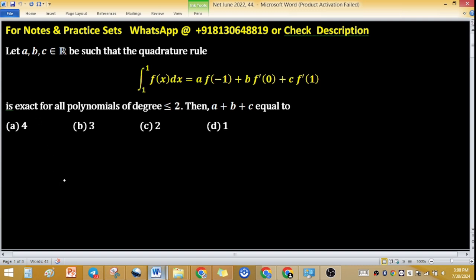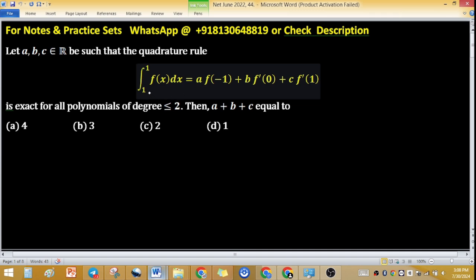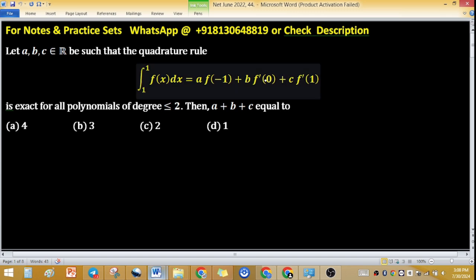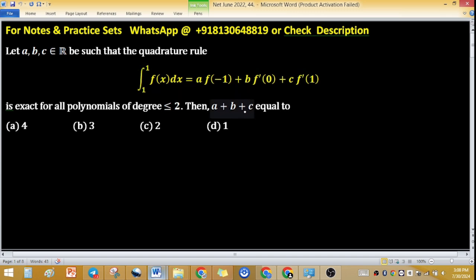Let A, B, C belong to R be such that the quadrature rule, integral from -1 to 1 of f(x)dx = a·f(-1) + b·f'(0) + c·f'(1), is exact for all polynomials of degree at most 2. Then we have to find A plus B plus C which is used in the above equation, as you can see on my screen.